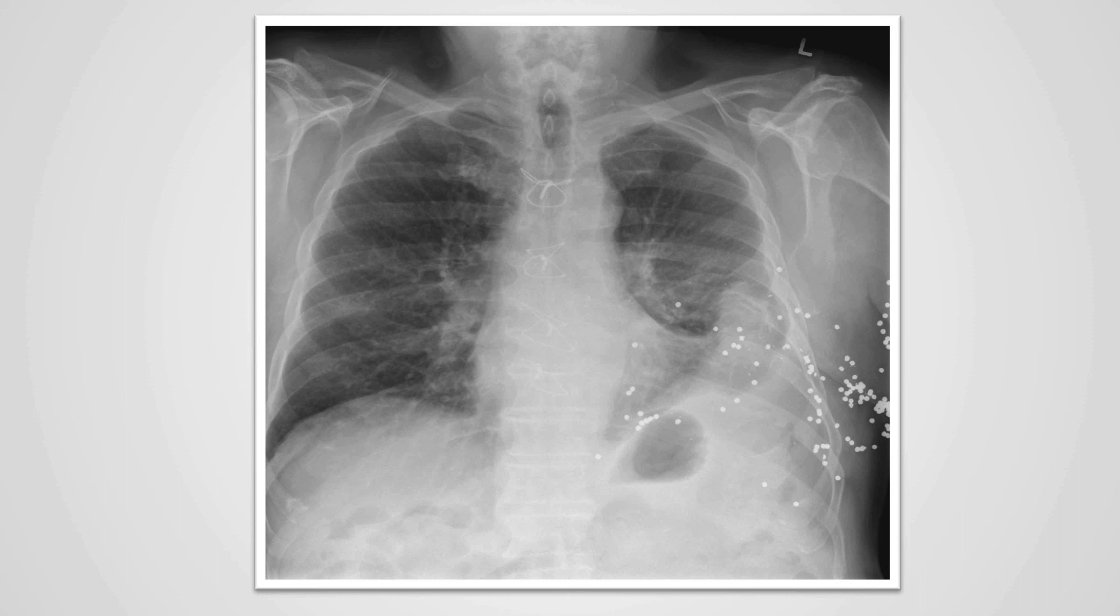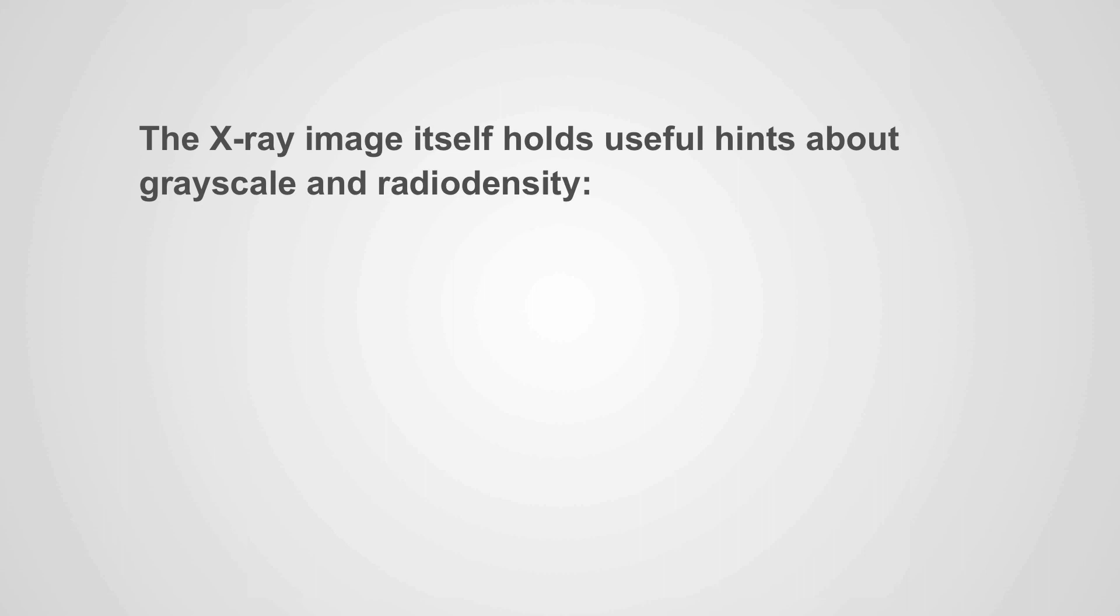In this case here, we have a patient who unfortunately had a mishap while on a hunting trip. And we can identify lead shot within the subcutaneous tissues of the chest wall on the left. In addition to this, we can also identify that there are these white lines in the midline, which represent metallic wires from a previous sternotomy. And we can identify that there are some changes within the left lung and the left pleural space that are secondary to the injury that the patient had from the hunting accident.